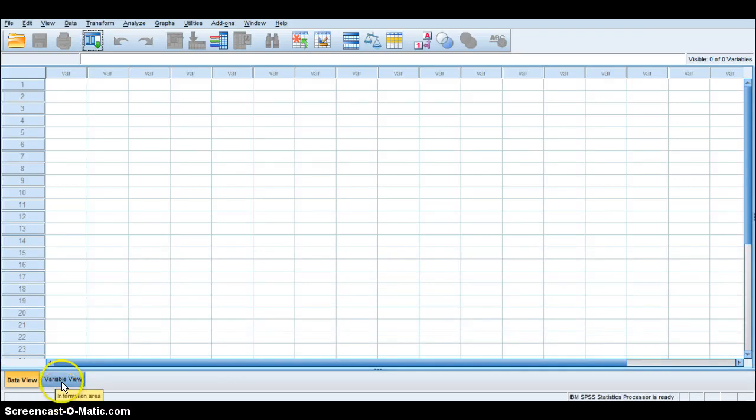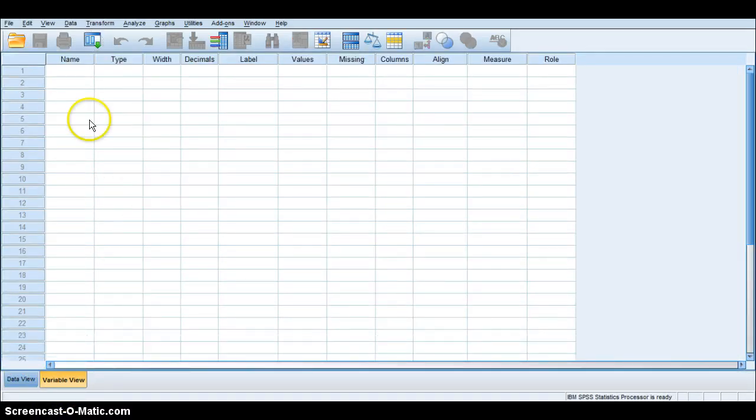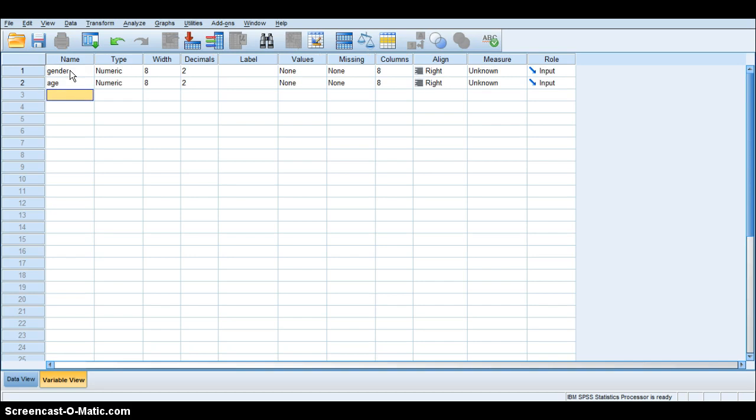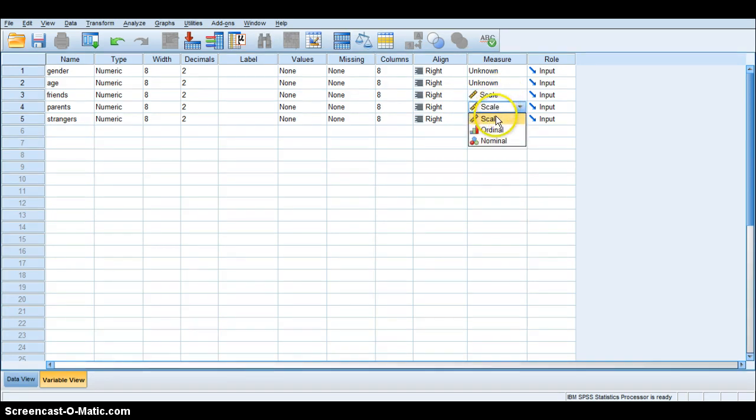So first thing I'm going to do is go to variable view and type in my variable names. So gender, age, and then the three dependent measures. So that will be friends, parents, and strangers. The dependent measures are numerical values, so we're going to make them scale variables. I'm going to put a ruler next to each of those three for friends, parents, and strangers. And then for gender and age, they are categorical variables, so I'm going to label them as nominal.